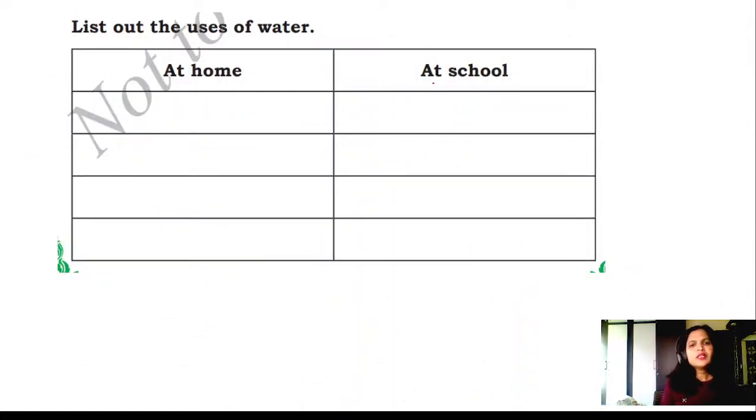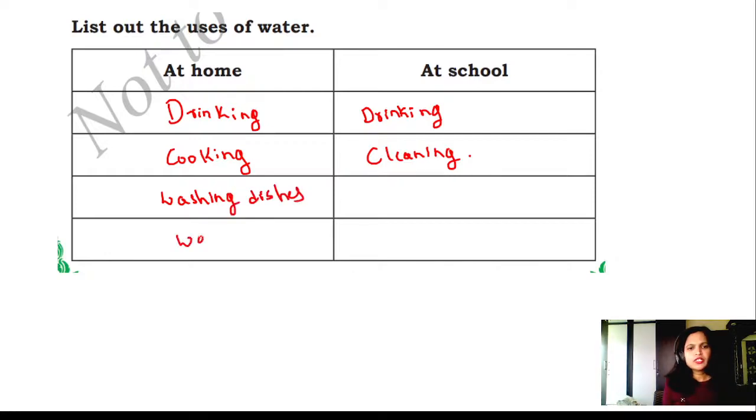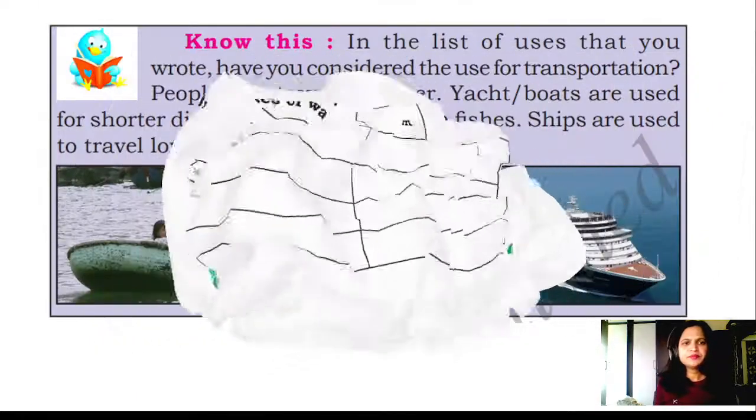List the uses of water at home. What are the uses of water? For drinking - here also drinking. For school also drinking water is required. At home: cooking. At school: cleaning. Cleaning department uses water. Washing dishes at home. Washing clothes at home. And here for what purpose you use water other than this? Hand wash at school. Then for toiletry - toilet you use water. At home also for toilet you need water.